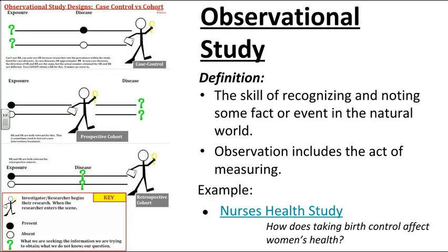We can also do an observational study, where we recognize that something is occurring and then measure it. Observational studies are frequently used with disease and disease spreading. A really good example is the nurse's health study from the 1950s, which started measuring the effect of birth control on women's health, then rapidly expanded to include nutrition and exercise. We've learned a lot over 60 years about women's health from that one observational study.